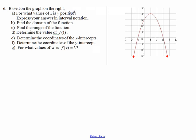Based on the graph on the right, for what values of x is y positive? We are looking for the points with y values that are greater than 0. So these points are above the x-axis, and they are in the first and the second quadrant.